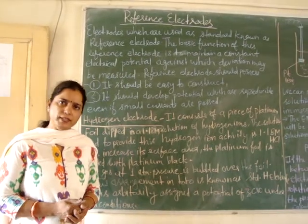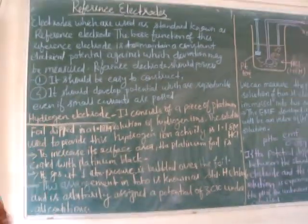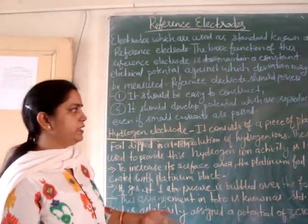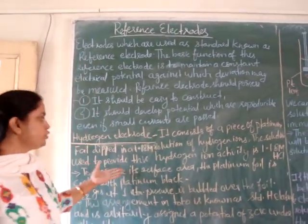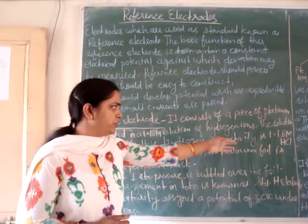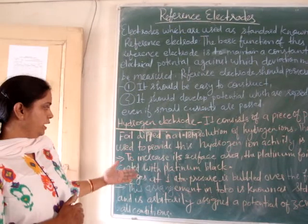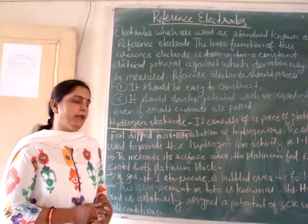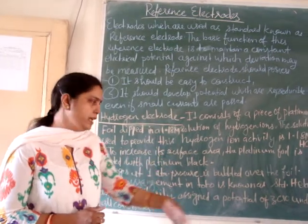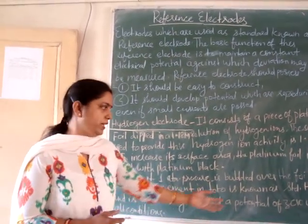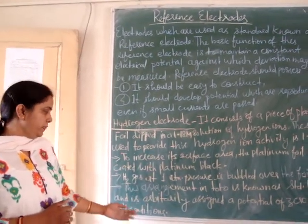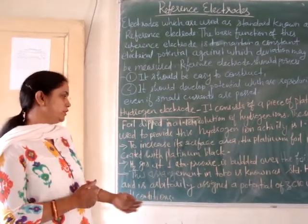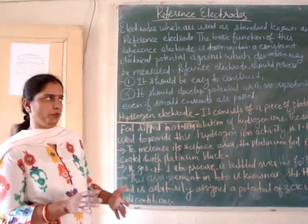Now we will see the examples of reference electrodes. The first one is the hydrogen electrode. It consists of a piece of platinum leaf or foil which is immersed in a 1.18 molar solution of hydrogen ions. The solution used to provide this hydrogen ion activity is 1.18 molar hydrogen chloride. To increase its surface area, the platinum foil is coated with platinum black, and hydrogen gas at 1 atmospheric pressure is bubbled over this foil. This arrangement in total is known as the standard hydrogen electrode, and it is assigned a potential of 0 under all conditions.